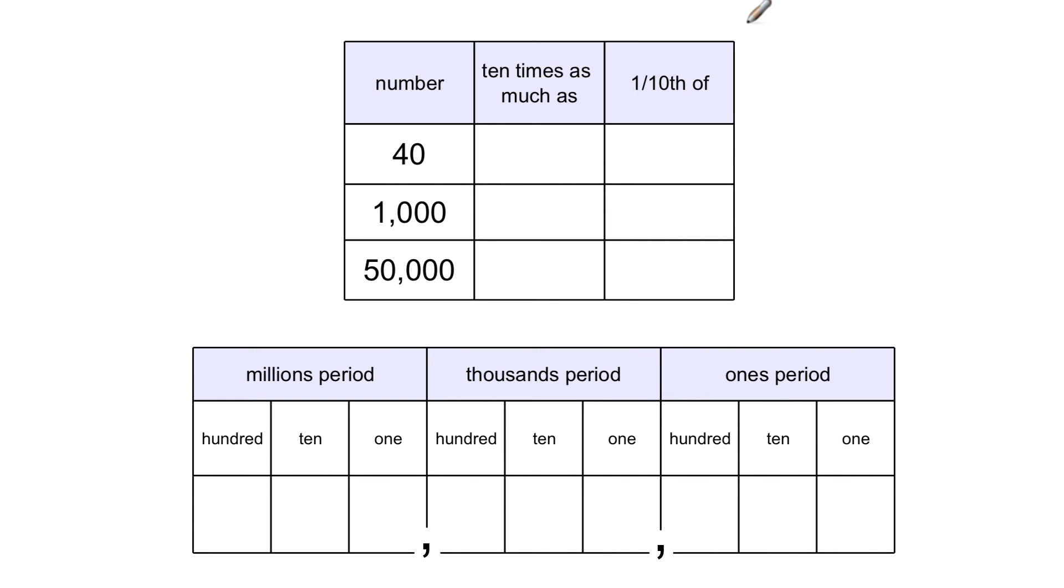There's a couple of different ways that the information is presented to you and the problems are written. The first way is in a table, and this one is very straightforward. It gives you a number, forty, one thousand, or fifty thousand, and asks you, how much is ten times that number in this column, and how much is one-tenth of that number in this column?